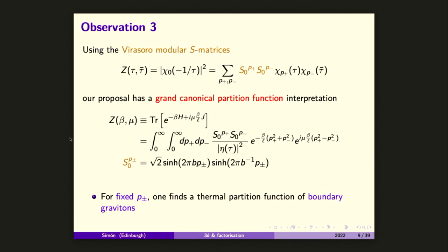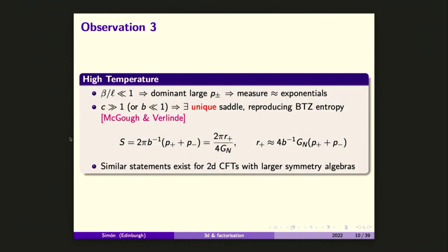I can write it as integrals over P+ and P−, the Liouville parametrization of the irrational CFT, with these measures. If you fix P+ and P−, since this is grand canonical you are summing over all of them. But if you fix your attention at fixed values of P+ and P−, because of the dependence on the eta function, you can interpret this as a spectrum of boundary gravitons — this is where the descendants come in.